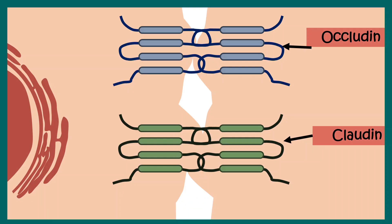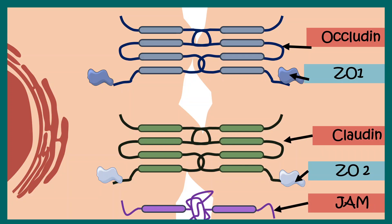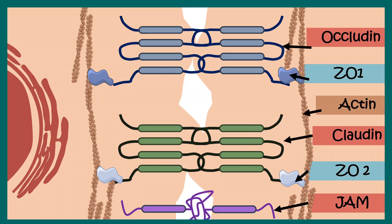This junction is so tight that even water molecules or small ions cannot pass through it. There are specific proteins such as ZO1 and ZO2, which are zonula occludens proteins, that associate with the claudin and occludin proteins. There is also another type of protein known as junction adhesion molecule, or JAM, which is also found in tight junctions. All these molecules link to the cytoskeletal elements on either side of the cells, forming a very tight junction that does not allow even small molecules to pass through.